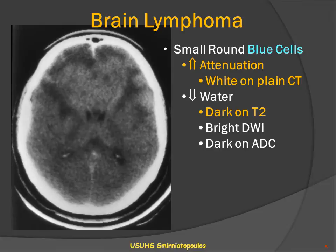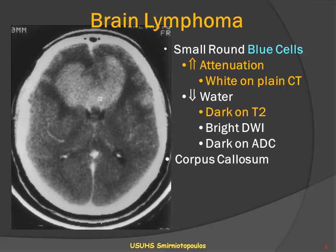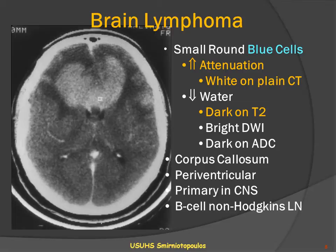Because lymphoma cells have decreased water content, they may be dark on T2-weighted MR. They can have restricted diffusion and be bright on DWI and dark on the apparent diffusion coefficient (ADC) map images. The lesions lack a blood-brain barrier, so they almost always show abnormal enhancement in the corpus callosum. The classic localization is in the periventricular area, and lymphoma is usually primary within the central nervous system — almost always a B-cell lymphoma. In fact, solid non-hematopoietic lymphomas are almost always B-cell lymphomas, while circulating or hematopoietic lymphomas are usually T-cell lymphomas.